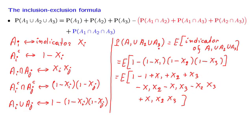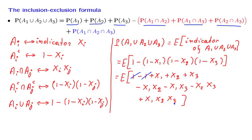The probability of this event equals the expectation of this random variable. The ones cancel out. The expected value of x1, an indicator variable, is just the probability of that event, and similarly for x2 and x3. The expected value of x1 times x2 is the indicator of the intersection a1 ∩ a2, so its expected value is the probability of that intersection. Similarly for the other pairwise terms. Finally, x1 times x2 times x3 is the indicator of a1 ∩ a2 ∩ a3, so its expected value is that probability. We have thus established exactly the formula we wanted.